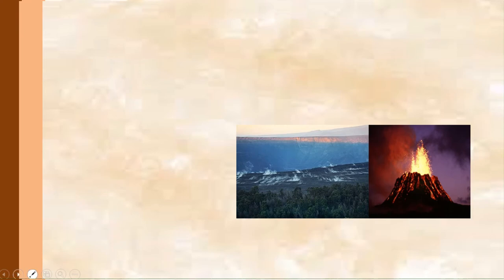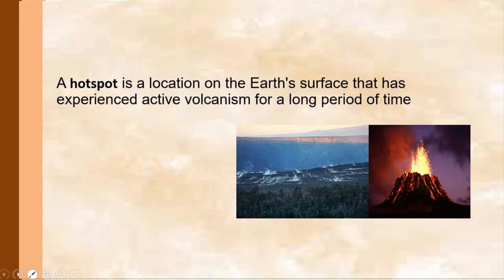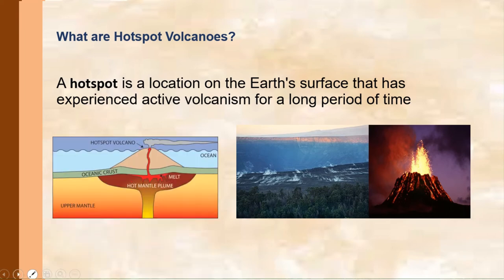There is what we call hot spot. A hot spot is a location on the Earth's surface that has experienced active volcanism for a long period of time. A volcanic hot spot is an area in the mantle from which heat rises as a thermal plume from deep in the Earth. The high heat and low pressure at the base of the lithosphere facilitates melting of the rock. This melt called magma rises through cracks and erupts to form volcanoes. Examples include Hawaiian island chain, Iceland, and Yellowstone hot spot.